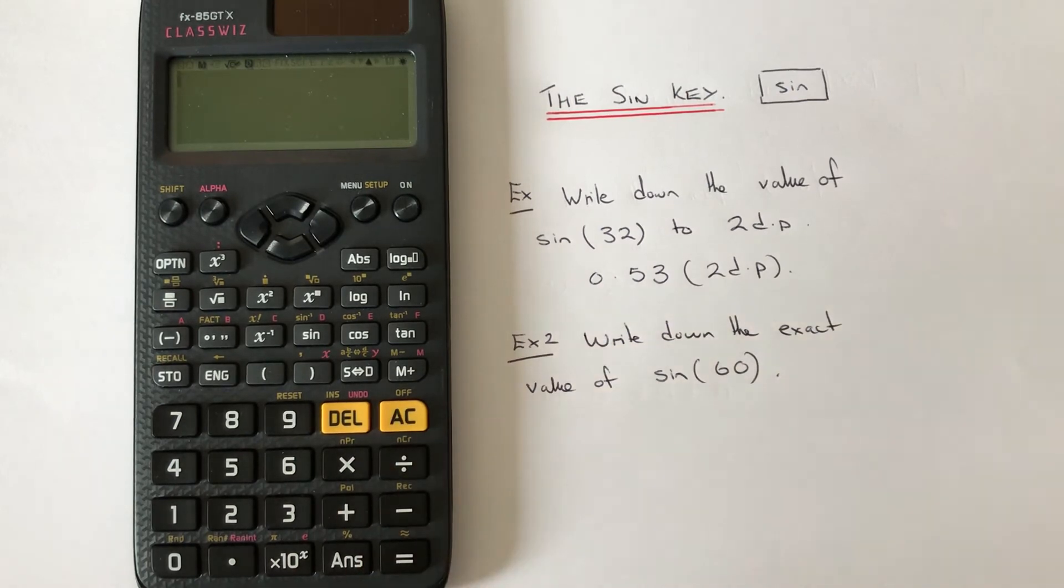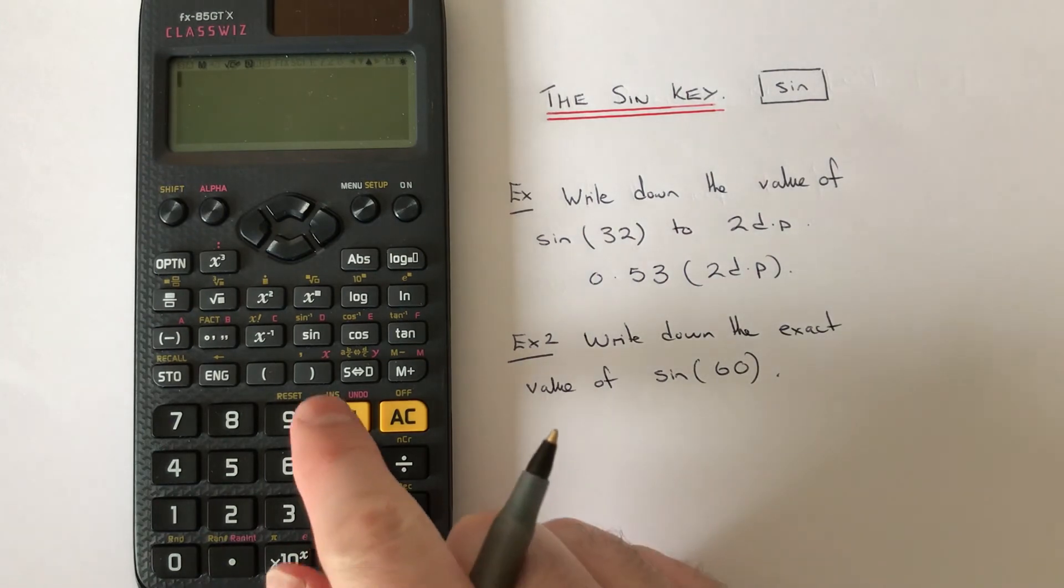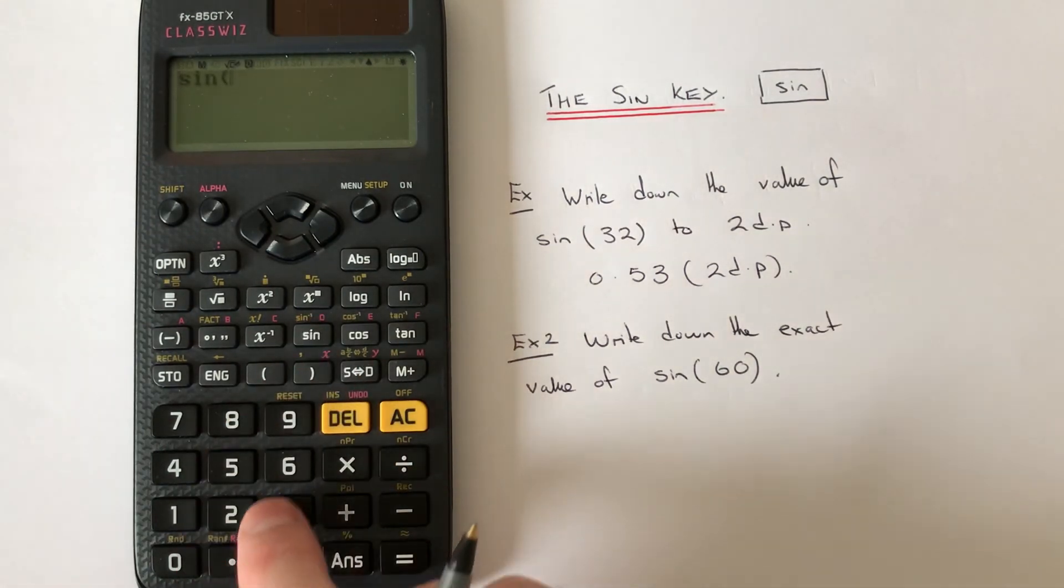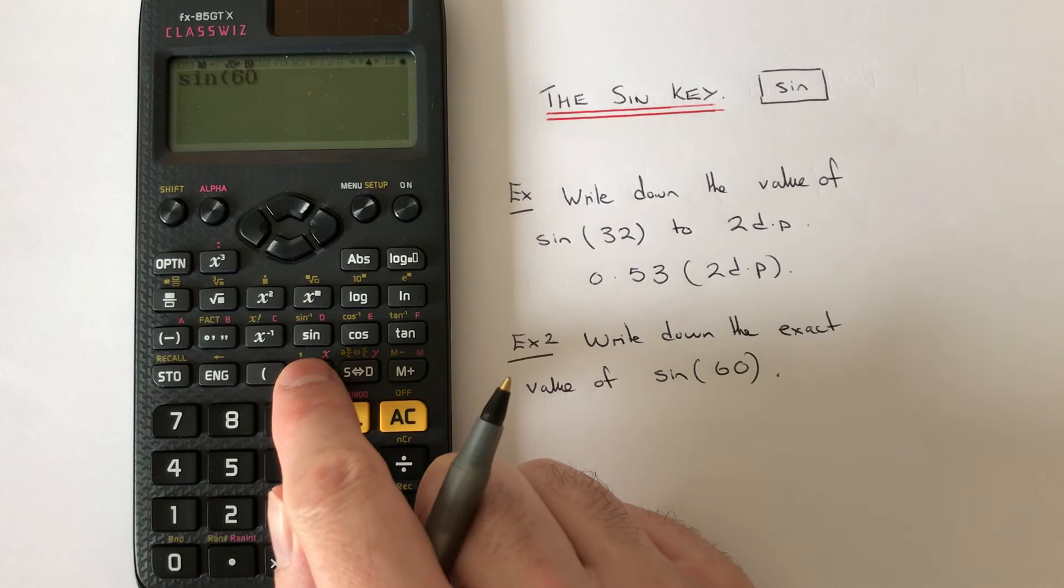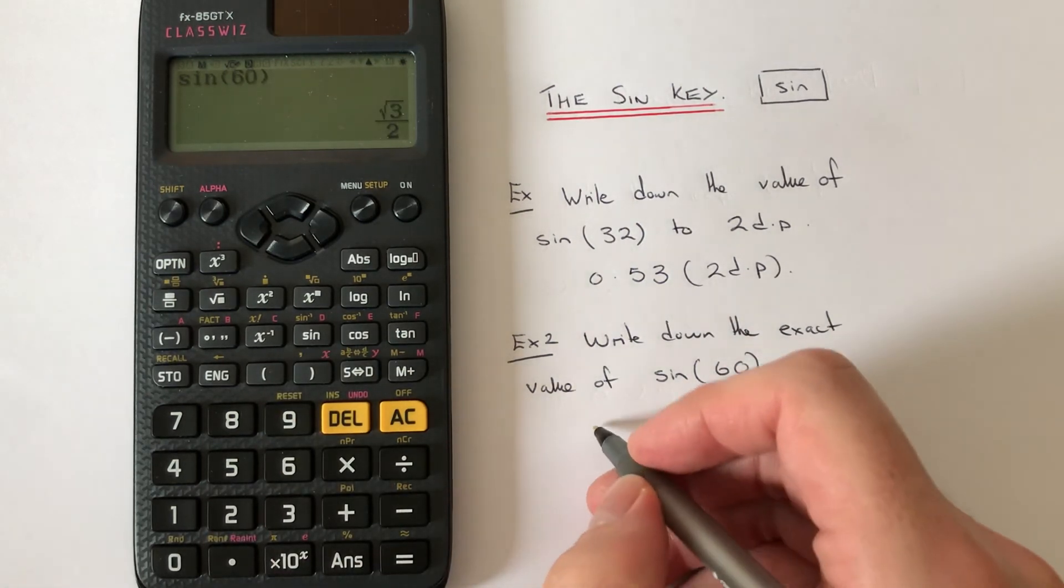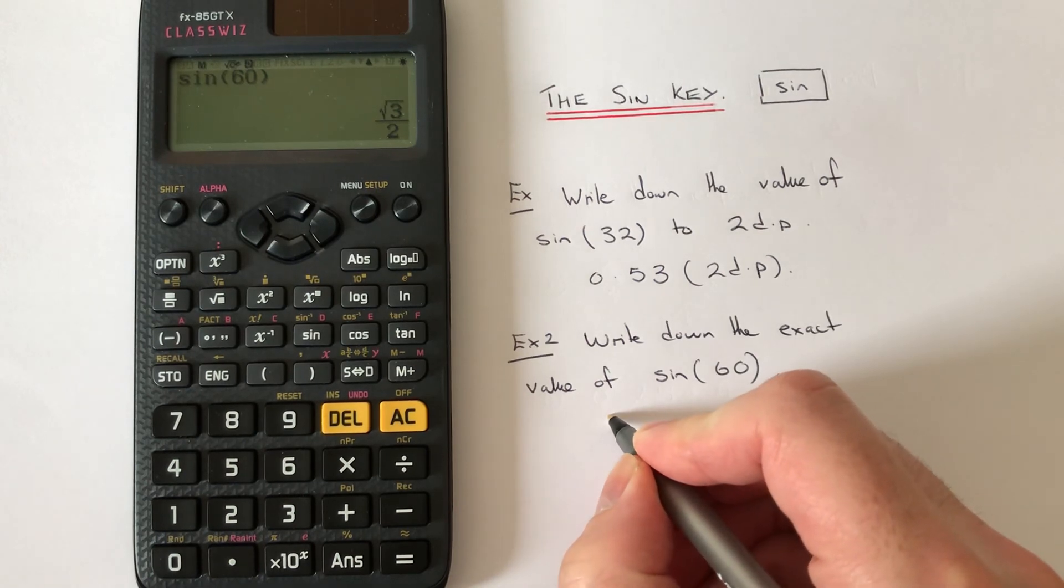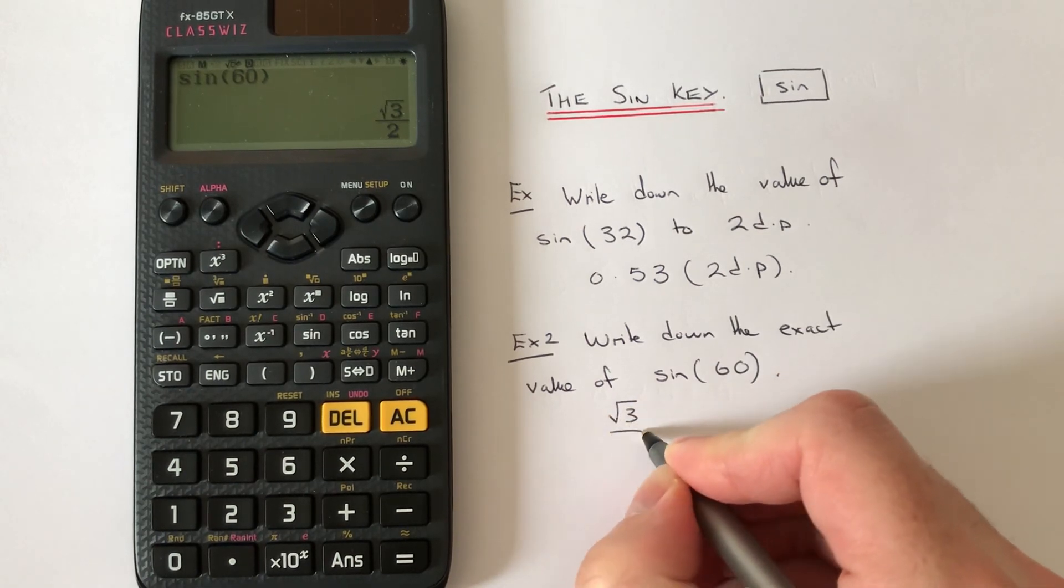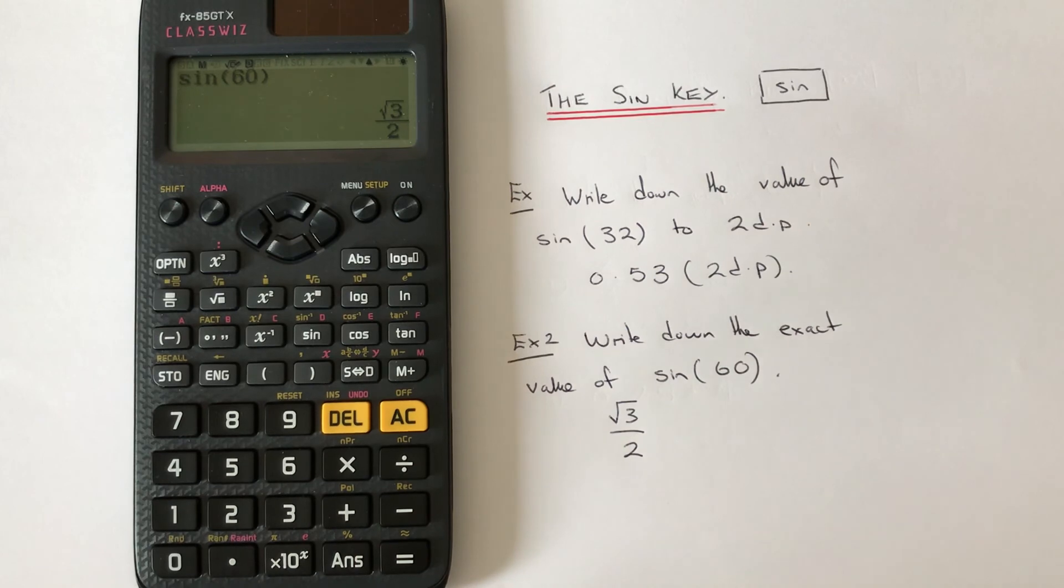This time we've got to write down the exact value of sine 60. So another thing that you can do as well with this sine key is it can actually give you the exact answer to the value. Okay, so let's press sine and then 60, close your bracket, and there you can see we have the exact answer in surd form. So we have root 3 over 2.